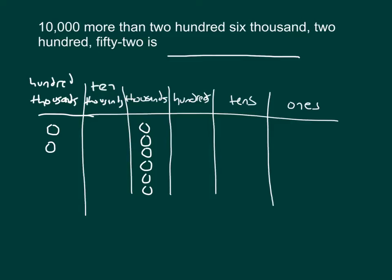As we continue to model that, we have 252 — that's two hundreds, five tens, and two ones.